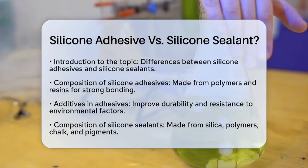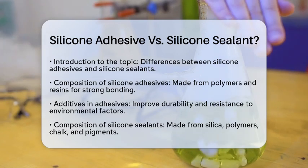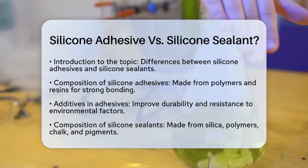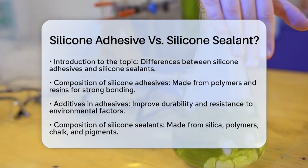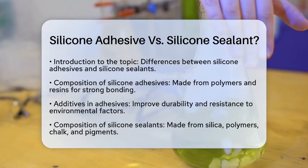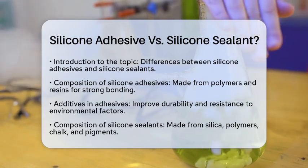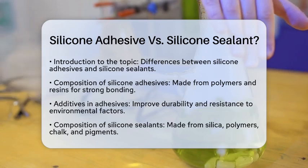First, let's talk about composition. Silicone adhesives are made from polymers and resins. These components give them strong bonding capabilities. They often include additives that improve their durability and resistance to environmental factors.